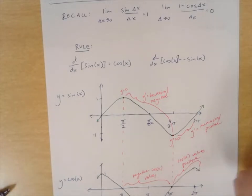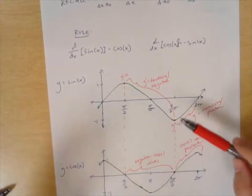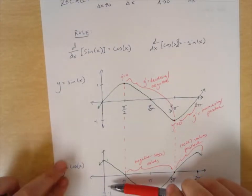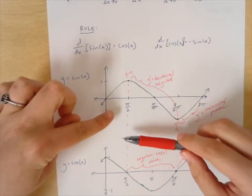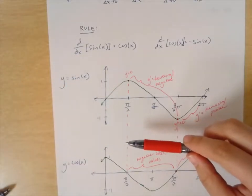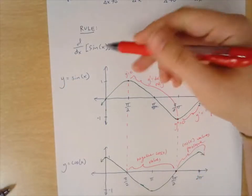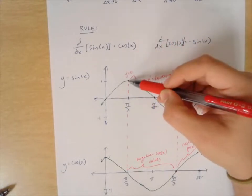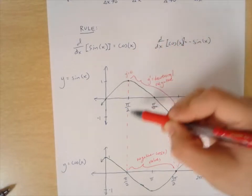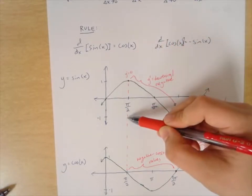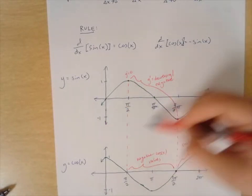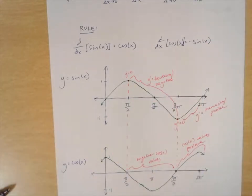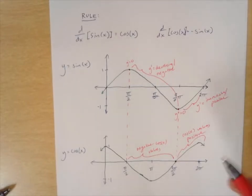For cosine of x, its derivative is negative sine of x, which makes sense by the same process — looking from cosine of x to sine of x flipped over the x-axis. That graph would still cross the origin, but reach negative 1 at π/2 instead of positive 1. That graph of negative sine of x is the derivative of cosine of x.